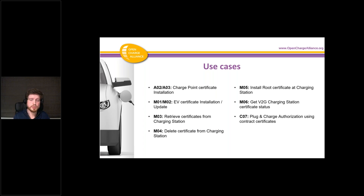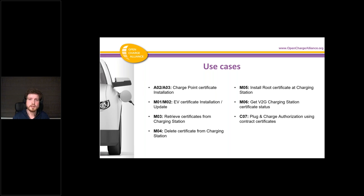These are the use cases defined in OCPP. We gave them the same ID numbers in the application notes as described in the OCPP 2.0.1 specification. For example, A02 and A03 describe how to install the charge point certificate, and there are other use cases for installing or updating certificates in the car. M03 and M04 are for maintaining and handling the certificates installed in the charging station — retrieving, deleting, and installing root certificates.